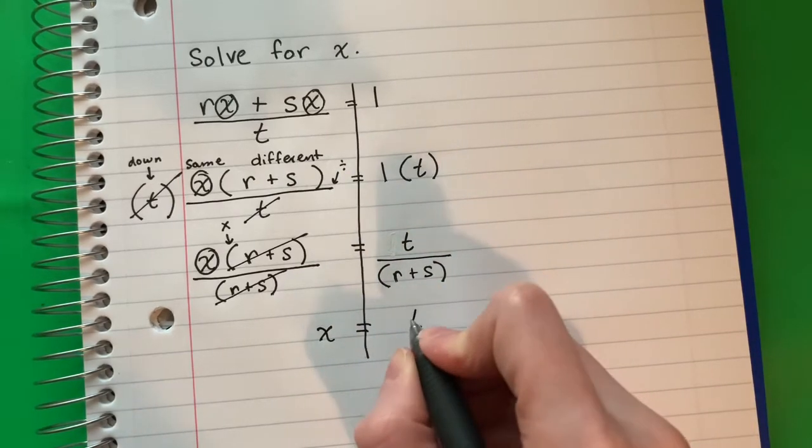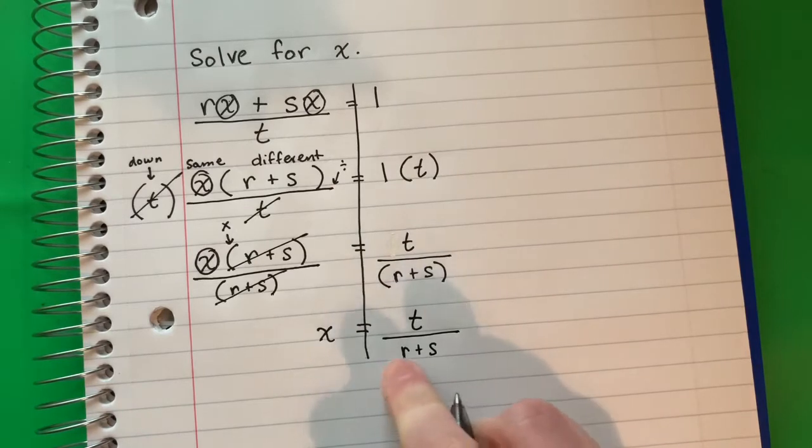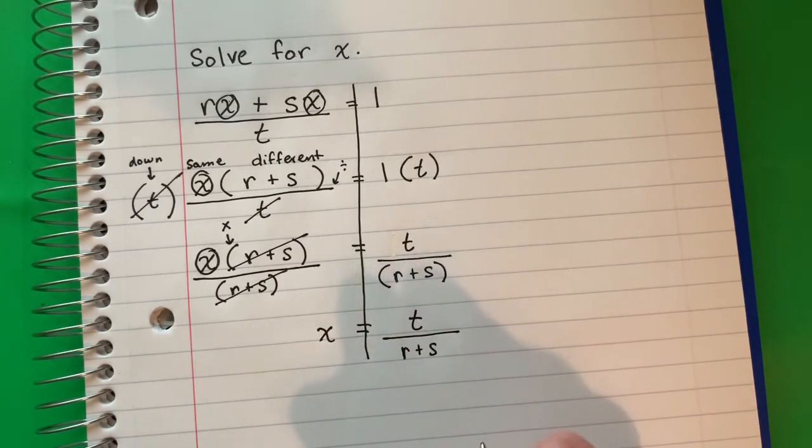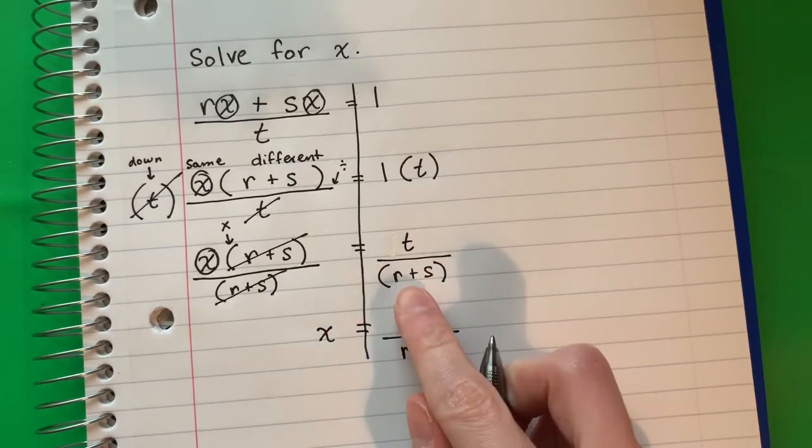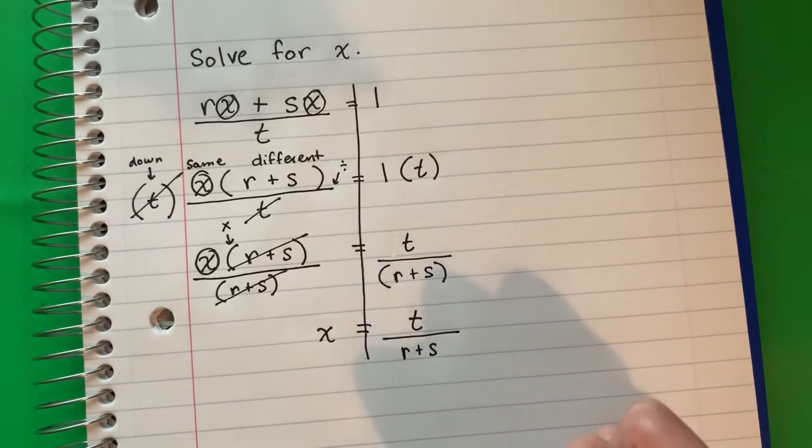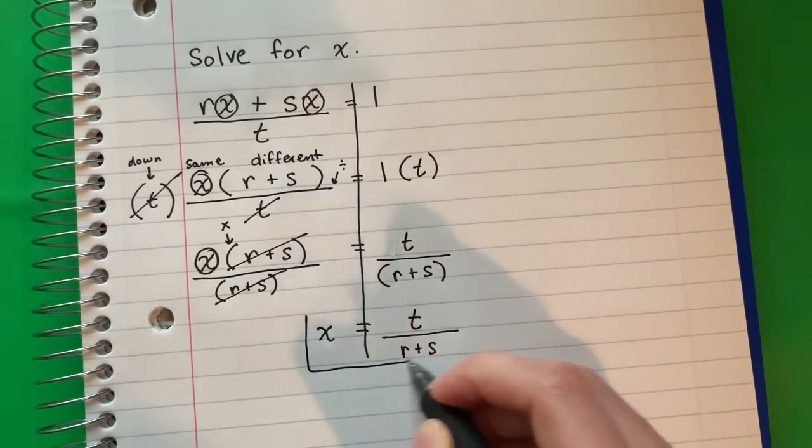Is the same. T divided by r plus s. No parenthesis down because the r plus s are together alone down. No necesito los paréntesis porque el r más s son juntos, están juntos abajo. Solos. Okay, so this is my answer.